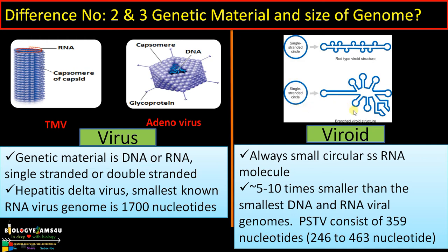The single-stranded RNA molecule may be branched or rod-type in structure. This is a rod-type viroid structure; this is a branched viroid structure. Regarding genome size, hepatitis delta virus — the smallest known RNA virus — has a genome size of 1700 nucleotides and is often called a viroid-like virus in the animal world. Whereas the viroid genome is 5 to 10 times smaller than the smallest DNA and RNA viral genomes. PSTV consists of 359 nucleotides, and viroid genomes range between 246 to 463 nucleotides.